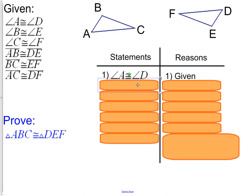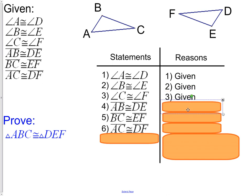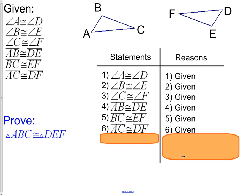So the given information in this question was angle A is congruent to angle D. There is my step one. We are also given that B is congruent to E, C is congruent to F, side AB was congruent to side DE, side BC was congruent to side EF, and lastly AC was congruent to DF. The reason for all of those can be given. That information was given to us.